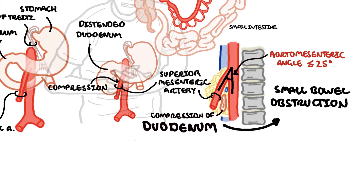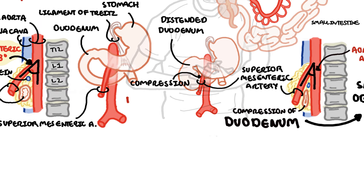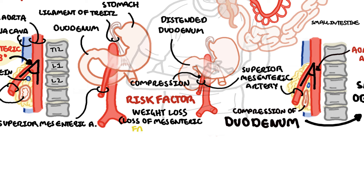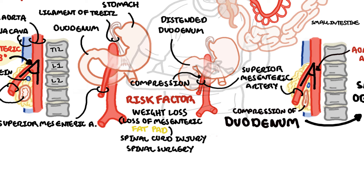Risk factors for developing superior mesenteric artery syndrome include significant weight loss leading to loss of mesenteric fat pad as a consequence of any medical disorders, psychological problems, or surgery. For example, extreme weight loss can result from bariatric surgery, spinal cord injury, paraplegia, or prolonged bed rest. Spinal surgery can also cause this condition through correction of scoliosis.